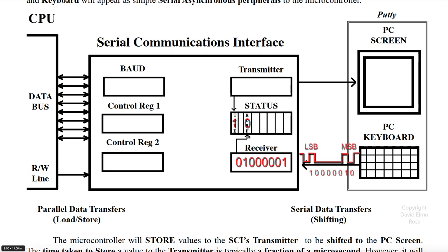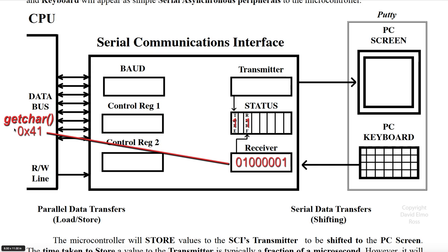At this point, the receiver data register full flag, which was 0 to begin with because it had not received any data, will now change to 1 because it has received data from our PC keyboard. A function like getchar will check the RDRF flag to see if there is any data in our receiver register. If there is, it's going to load it from the receiver into a CPU register. The read-write line will be high, indicating we're loading data. When that transfer is complete, the RDRF flag will go back to 0, indicating the receiver contains no new data — though it will still hold 41 until another key is pressed.